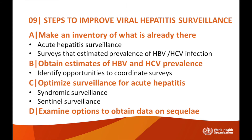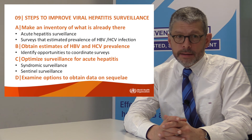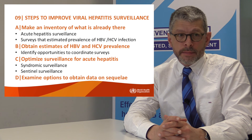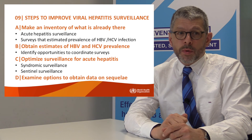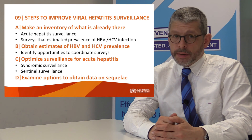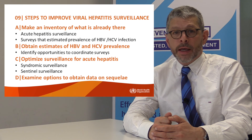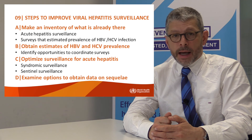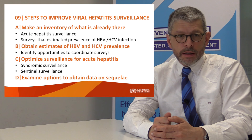In a given country, there will usually be an existing surveillance system for viral hepatitis. For this reason, WHO suggests improving the existing system rather than creating a new one. The first step is to make an inventory of what is already there, including any acute hepatitis surveillance or ad hoc surveys estimating the prevalence of hepatitis B or C. The second step is to obtain estimates of hepatitis B or C prevalence.